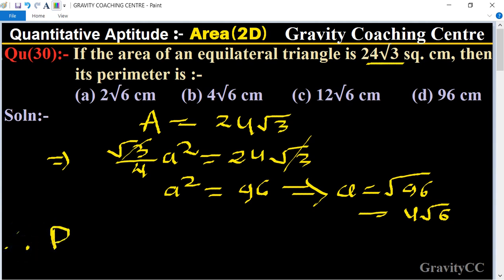Its perimeter equals 3 times side, equals 3 multiply 4√6, equals 12√6, which is the required answer. So option C is the correct answer.